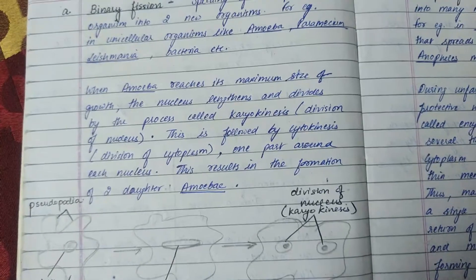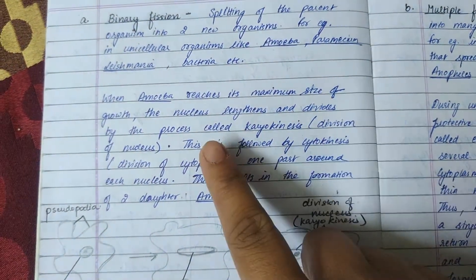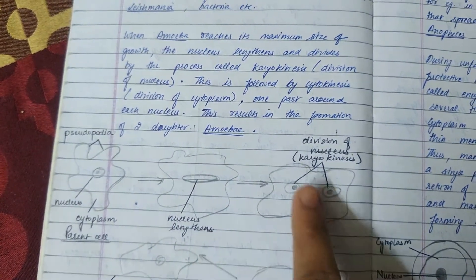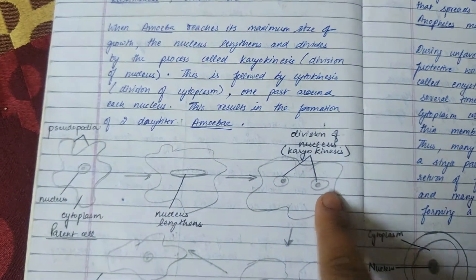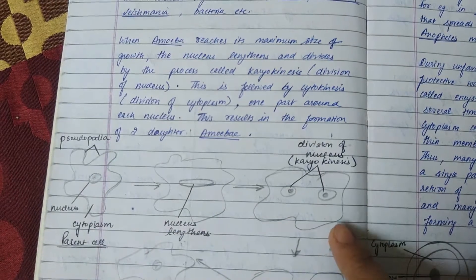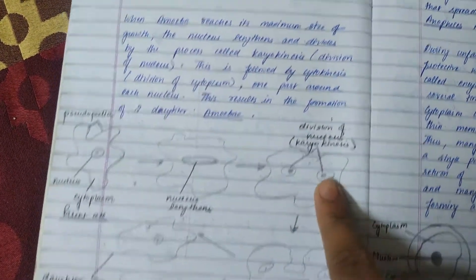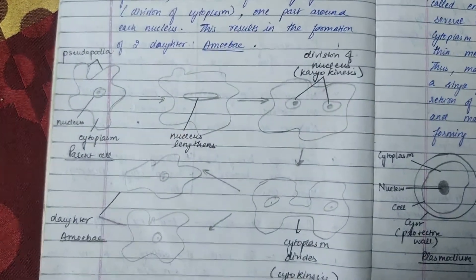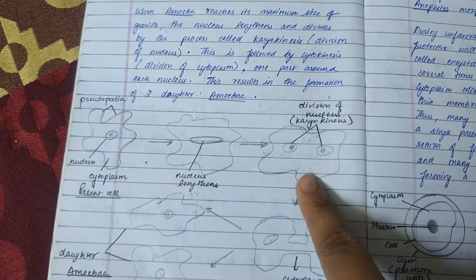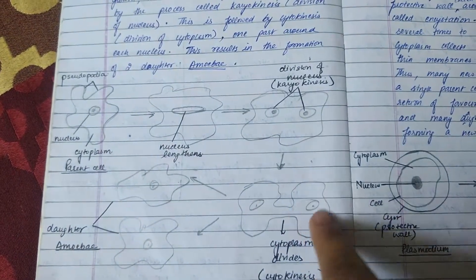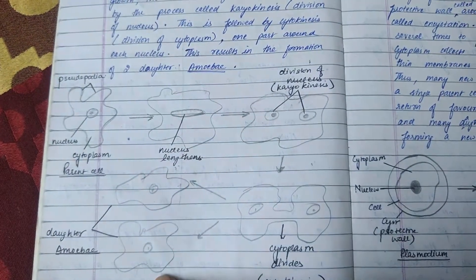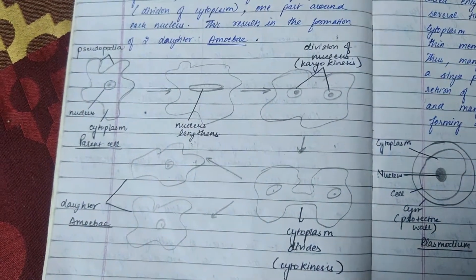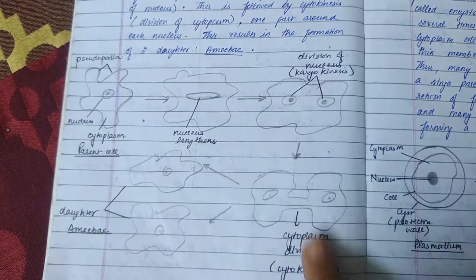When amoeba reaches its maximum size in growth, the nucleus lengthens and divides by the process of karyokinesis, which means the division of the nucleus. This is followed by cytokinesis, which is the division of cytoplasm. One part of cytoplasm collects around each nucleus, and this results in the formation of two daughter amoebae. You must label your diagram as shown.